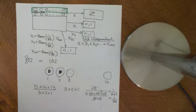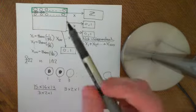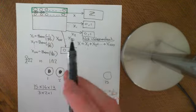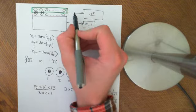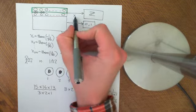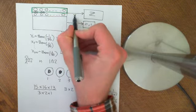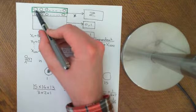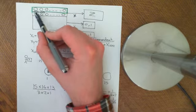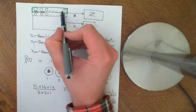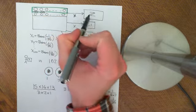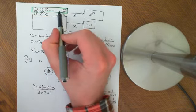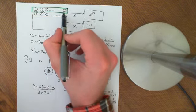Welcome back to this video. Here comes the crux. What we were trying to do was work out the expected value of this random variable big X, which ascribes to every single one of these possible intersections the number of people in each of those intersections.